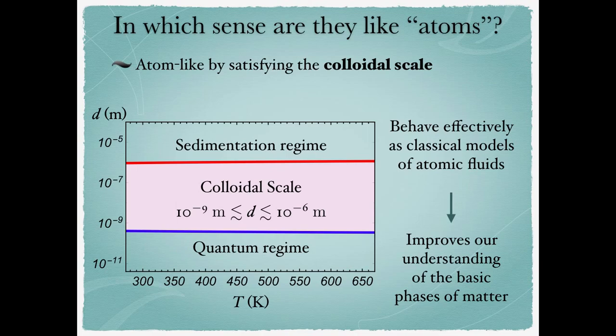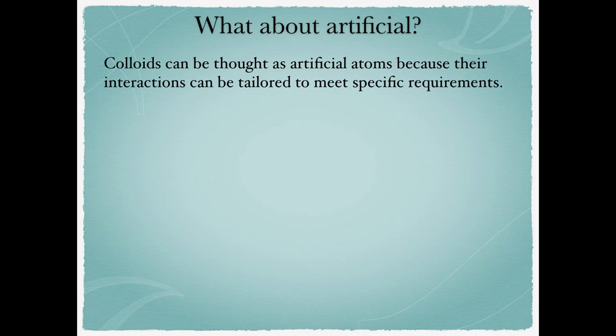Therefore, they correspond to almost perfect classical models of atomic fluids — beads running around where the motion is governed by classical mechanics. Interpreting colloids as classical models of atomic fluids has been tremendously important to improve our understanding of the basic phases of matter. I won't enter into the details here as it goes beyond the scope of this course, but this is something to keep in mind. We can actually improve our understanding by tuning the interaction between colloids — that's the artificial aspect.